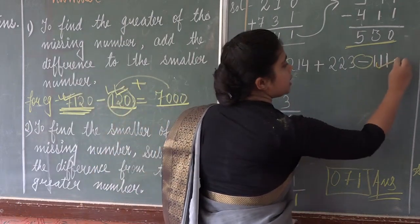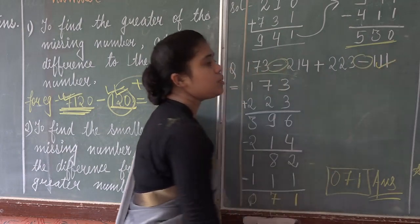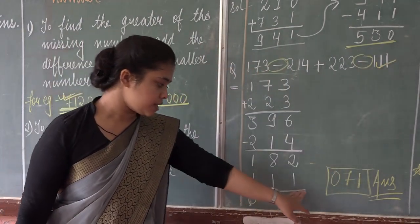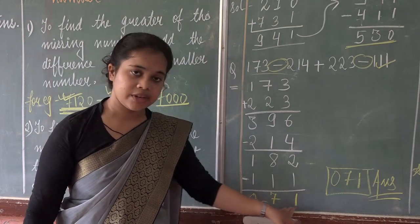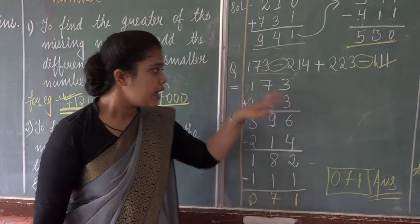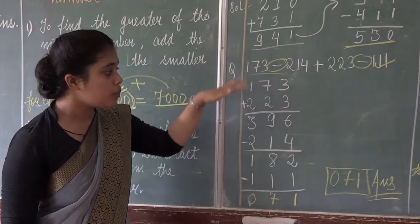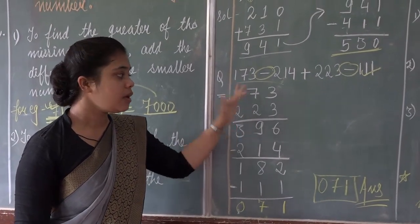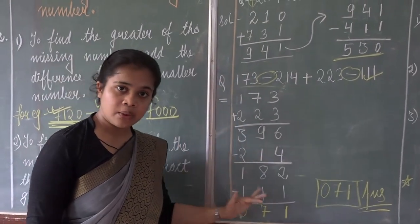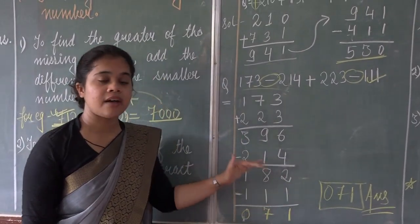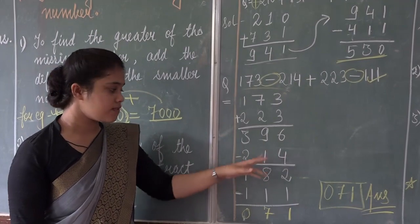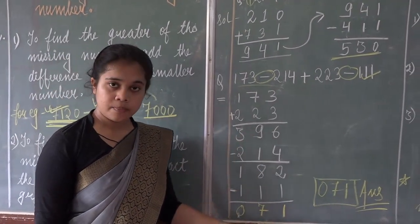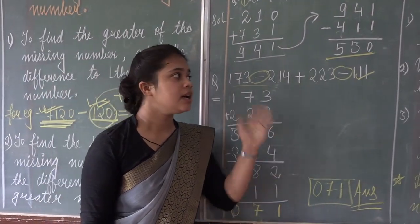Now we need to subtract 111 from it. When we subtract it, we get 71. So to summarize: first add the numbers having a plus sign, then one by one subtract the numbers having a negative or minus sign before them. I hope this is clear.